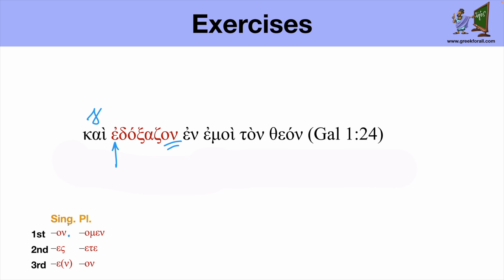Again we find it in the first person singular or third person plural. So it could be either I was glorifying or they were glorifying. Now we see a prepositional phrase in me or in myself. And then tontheon God. So I was glorifying God in myself or they were glorifying God in me.